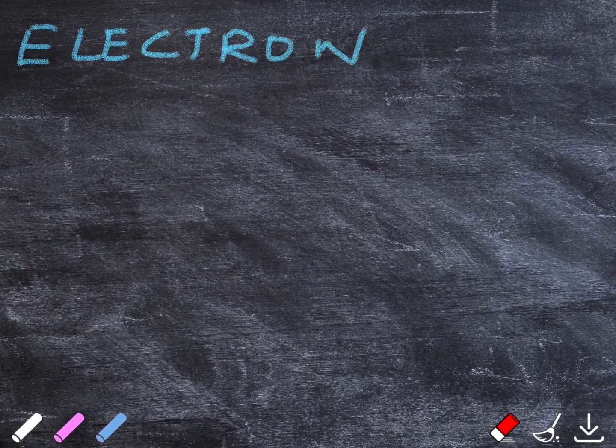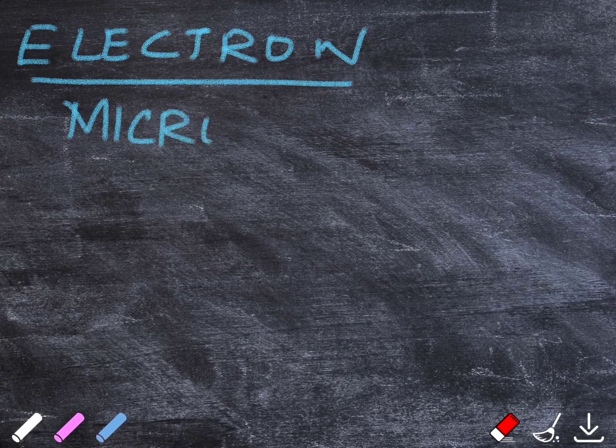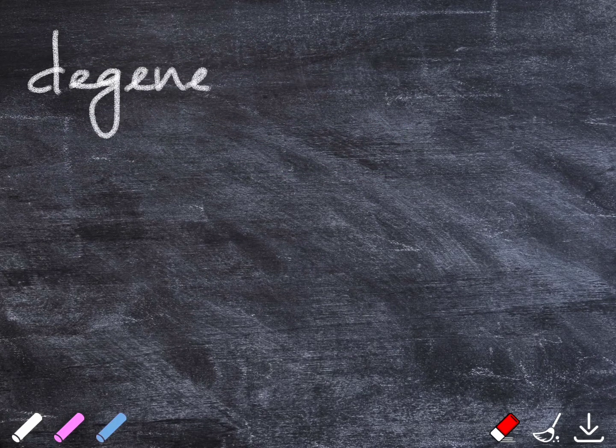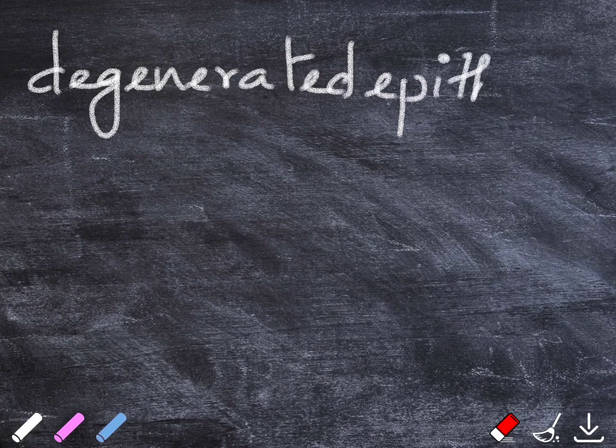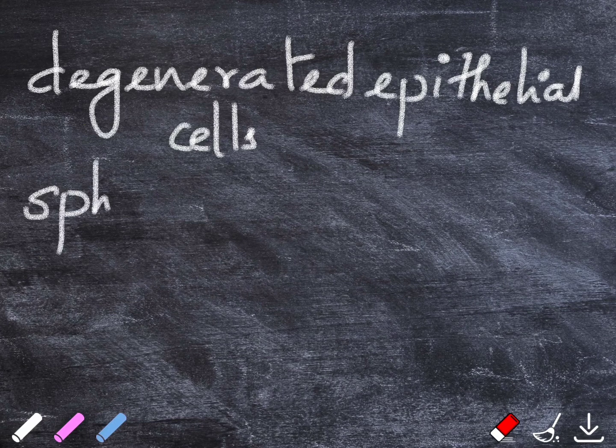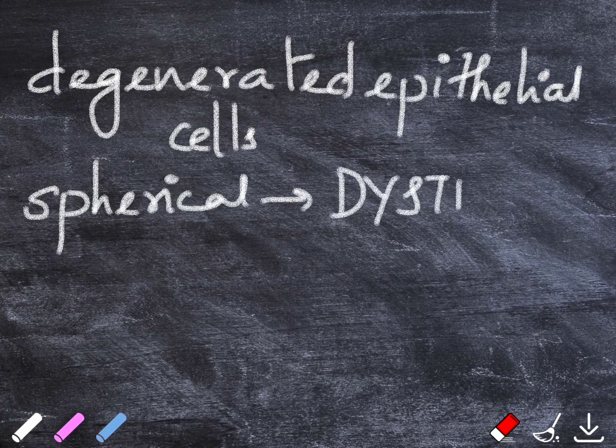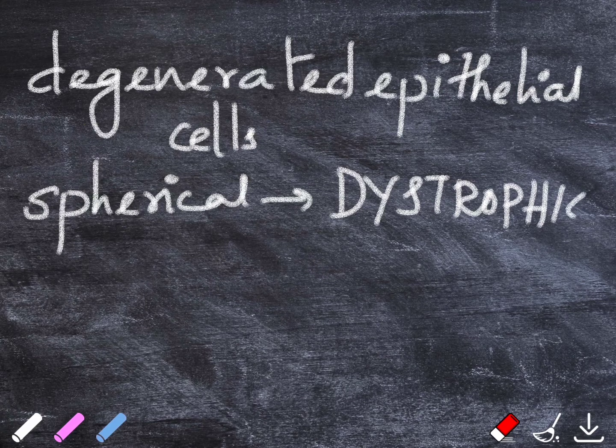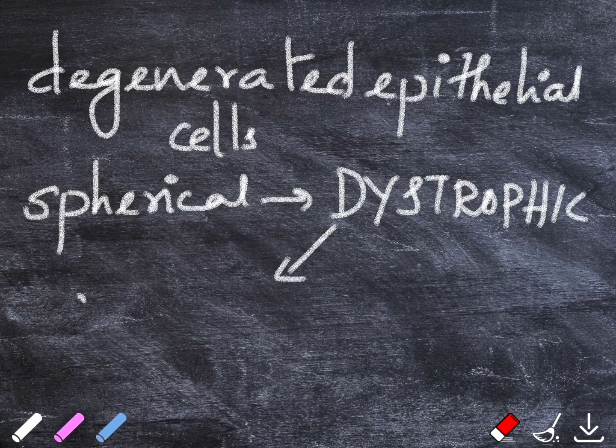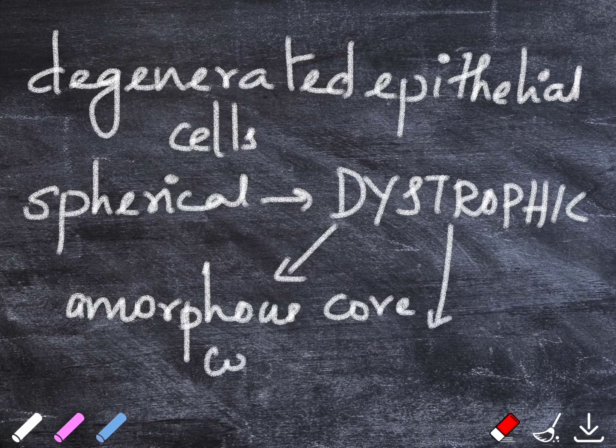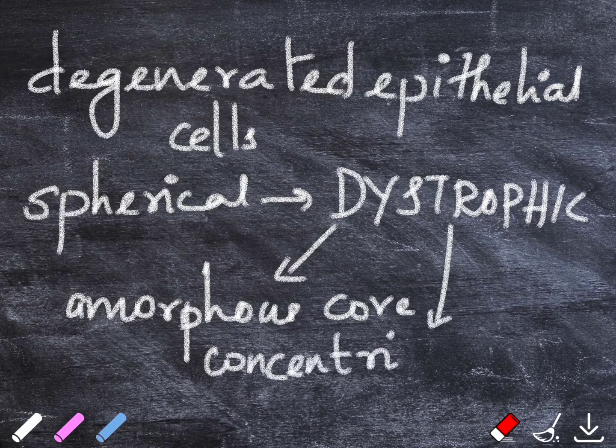Moving on to the electron microscopic feature or the ultrastructural feature of COC. Ultrastructurally, what was found was that these ghost cells were actually the degenerated odontogenic epithelial cells. This spherical dentine-like calcifications were found to be dystrophic calcification that is actually taking place in these ghost cells. This dystrophic calcifications showed an amorphous core which is surrounded by concentric calcified rings.